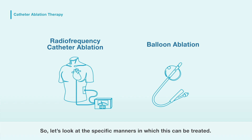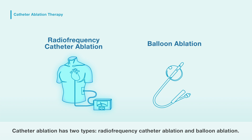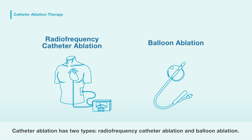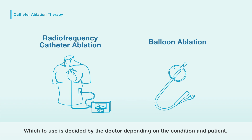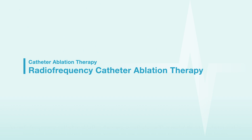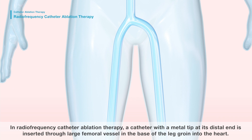Let's look at the specific ways this can be treated. Catheter ablation has two types: radio frequency catheter ablation and balloon ablation. Which to use is decided by the doctor depending on the condition and patient.